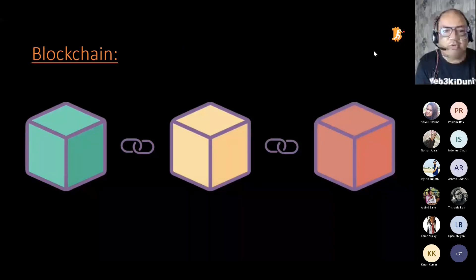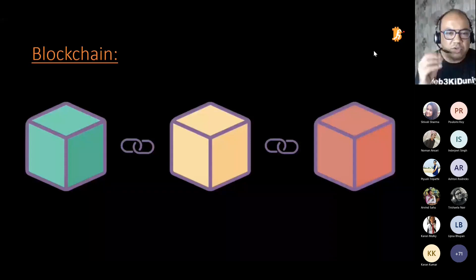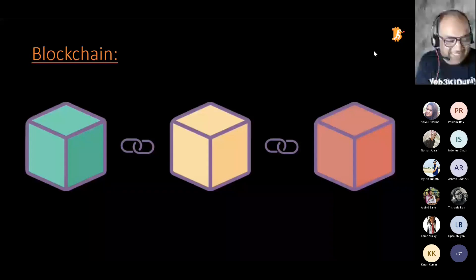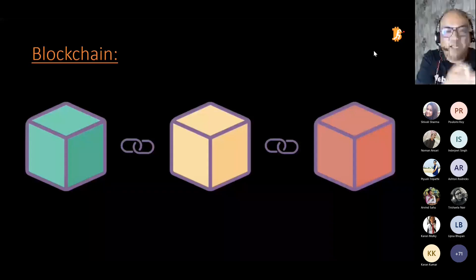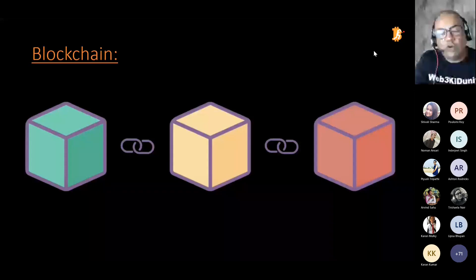To understand blockchain, first we need to understand what it is. You must have heard this term many times in newspapers and through friends. In simple form, blockchain is nothing but a chain of blocks. Every block has some information — it's a ledger. Every block is a ledger copy and every copy of the ledger is connected to each other.